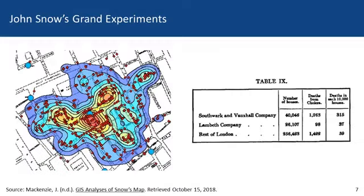You can see on the table on this slide the results of what John Snow learned based on houses supplied by the Southwark and Vauxhall Company versus those supplied by the Lambeth Company. Of the 40,000 houses supplied by the Southwark and Vauxhall Company, he noted over 1,200 cholera deaths, which resulted in a rate of 315 deaths per 10,000 houses. From the Lambeth Company, of the 26,000 houses, there were 98 deaths, or a rate of 37 per 10,000 households — a dramatic difference once the Lambeth Company began drawing water from upstream of the city.